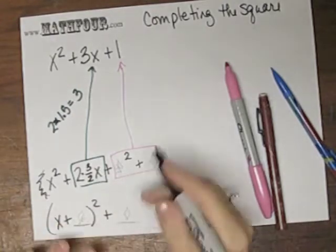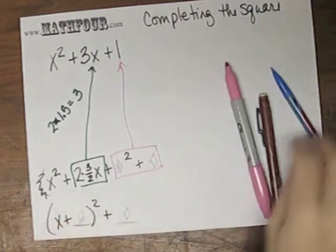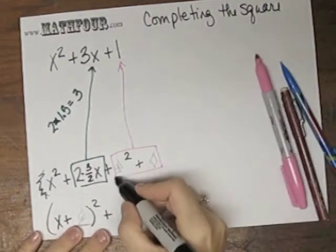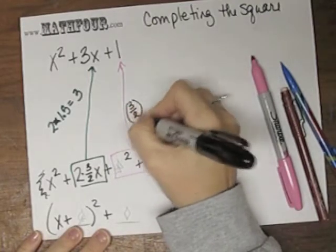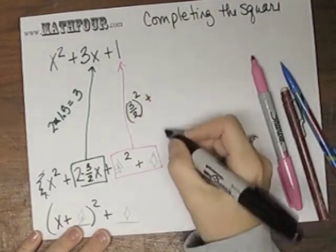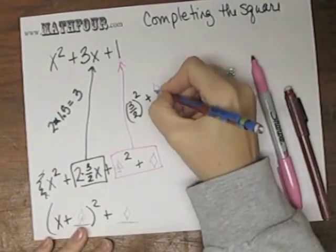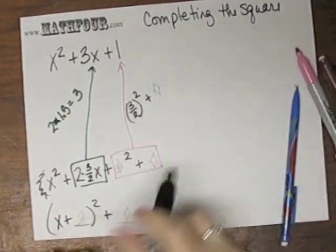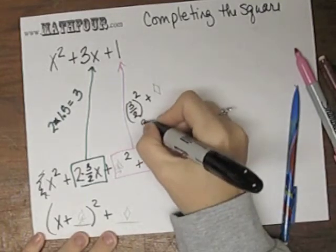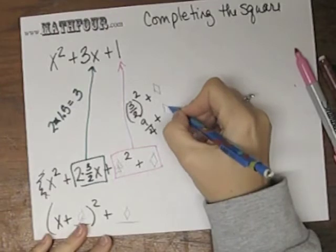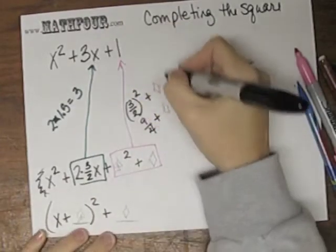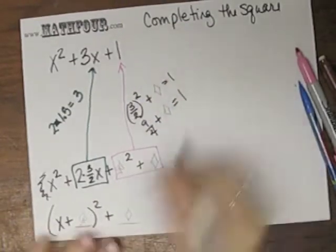So if the spades is 3 halves, this is then 3 halves squared. Plus this diamond. 3 halves squared is 9 fourths. Plus something. Well, this all has to end up being 1.